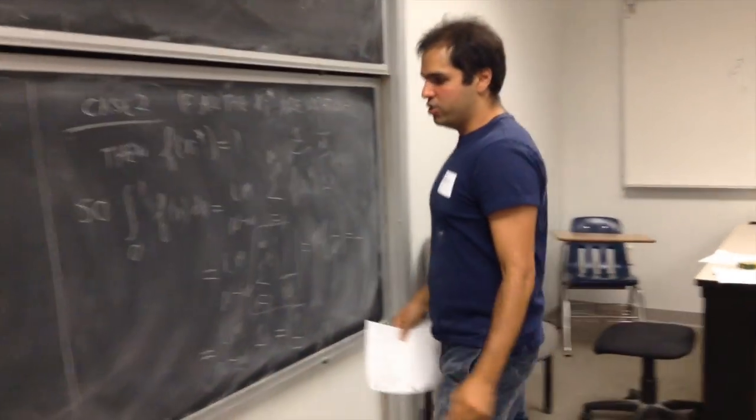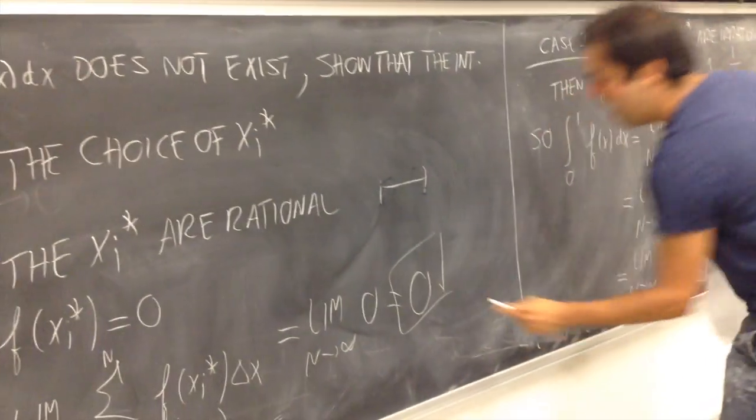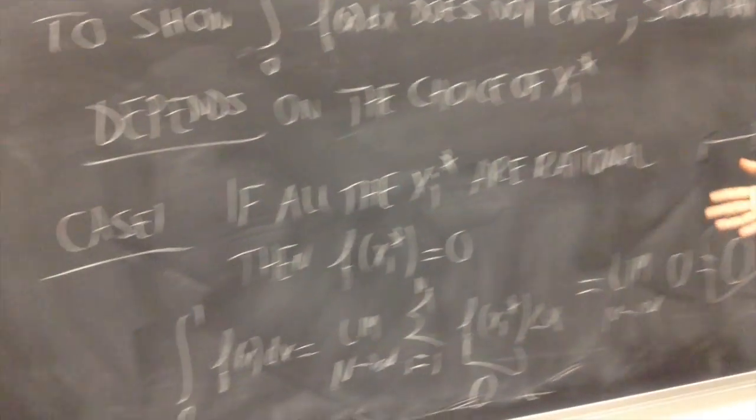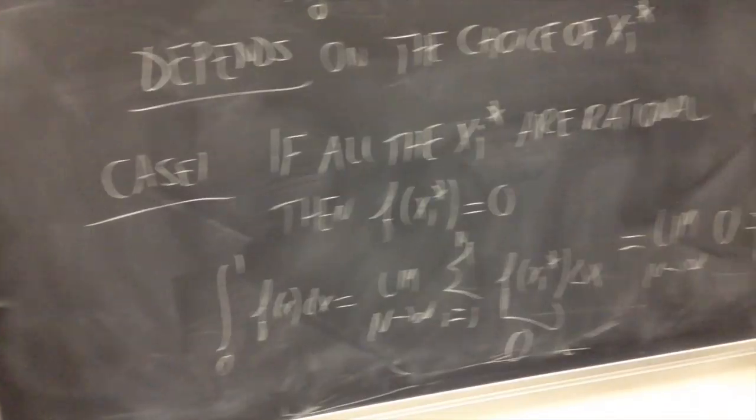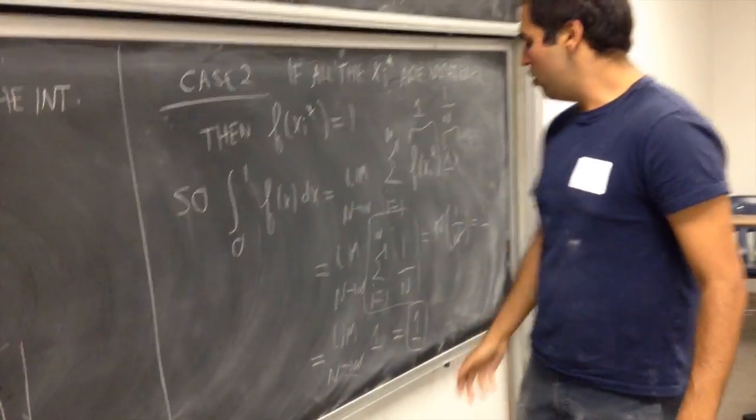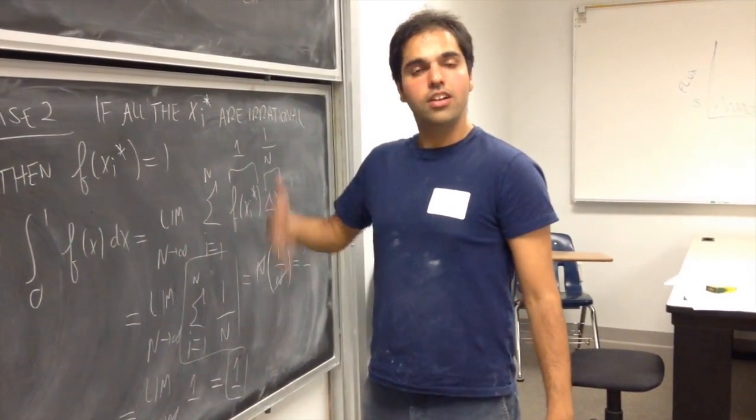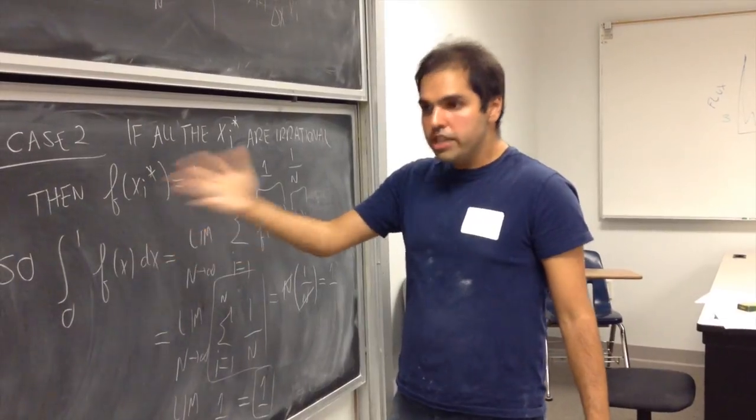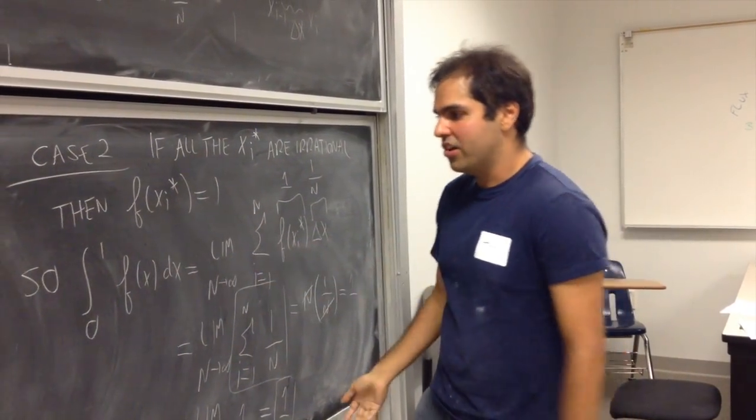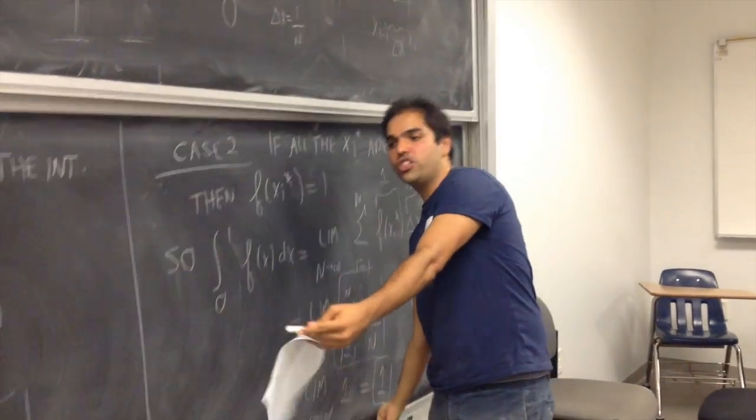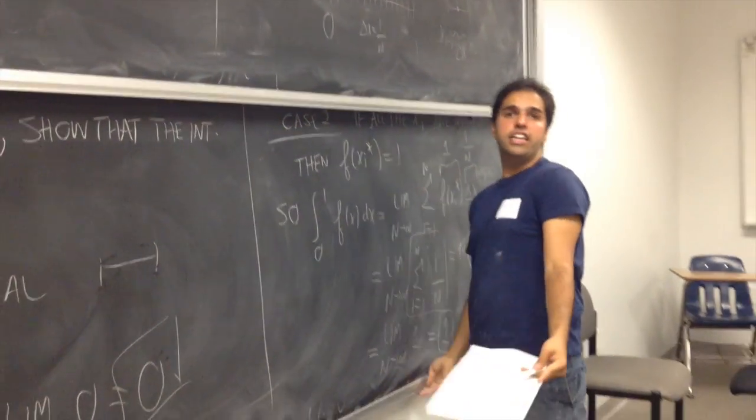But that's very strange, because on the one hand, we showed that the integral equals 0 with this choice of xi star. On the other hand, we showed that the integral equals 1 with this choice of xi star. So, the integral depends on the choice of xi star, and therefore, the function, strictly speaking, is not integrable.